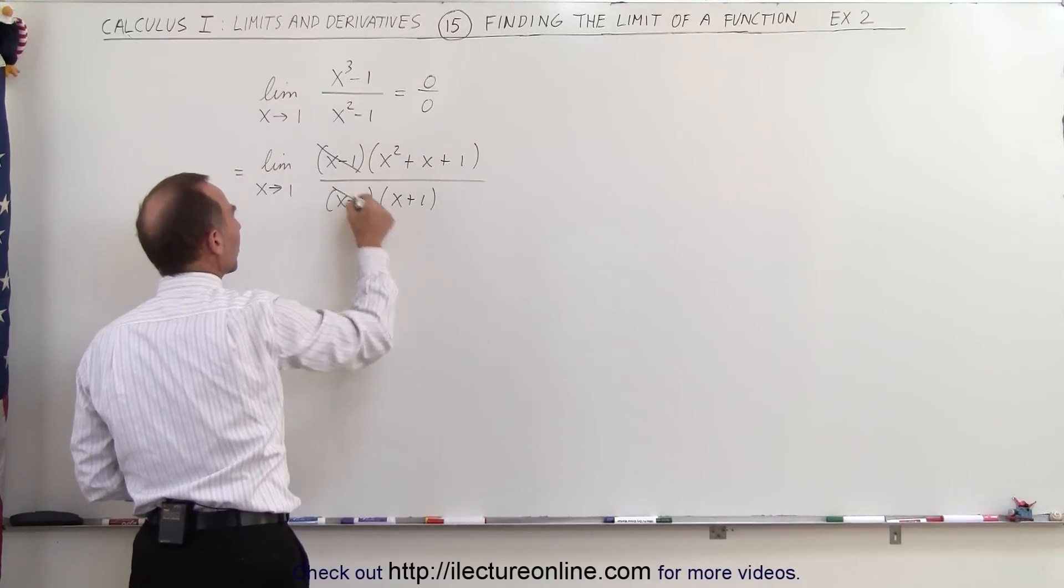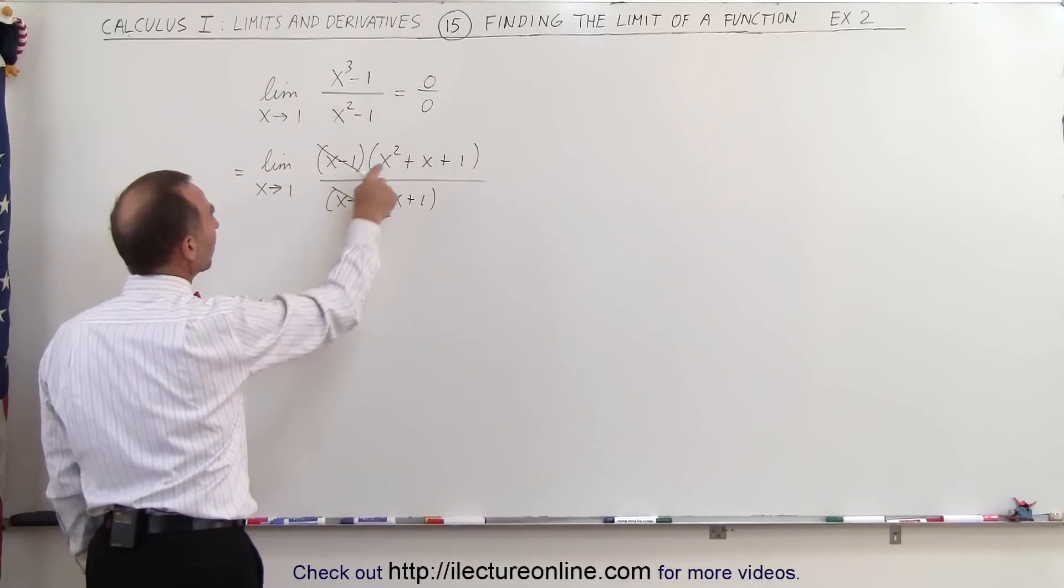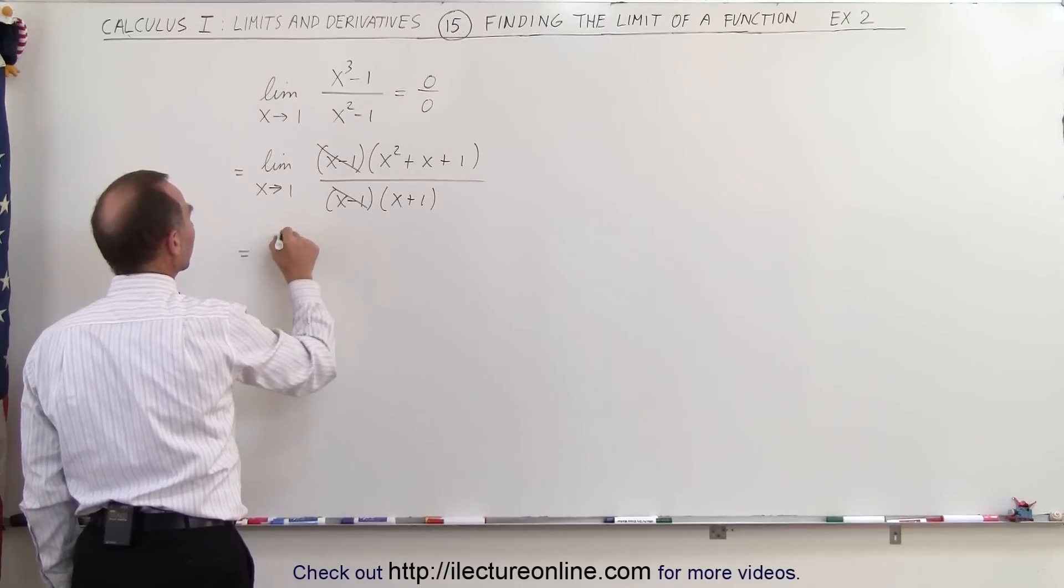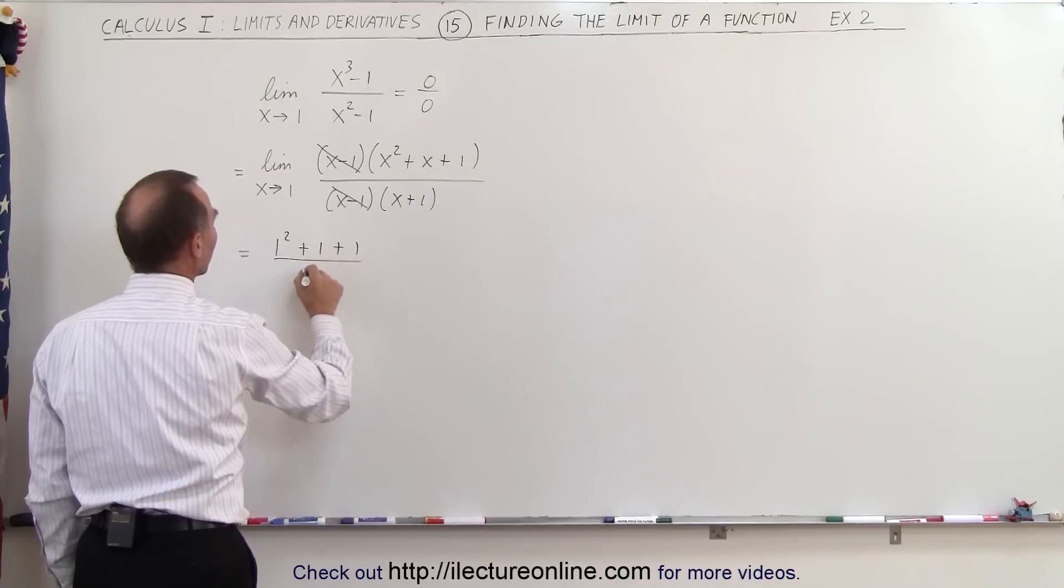So here you can see that the x minus 1 is cancelled out, and now you can go ahead and allow x to approach 1, plug in 1 for all x's in the numerator and the denominator. So this is equal to 1 squared plus 1 plus 1 divided by 1 plus 1.